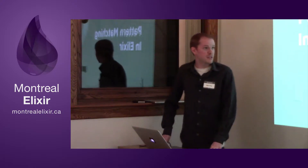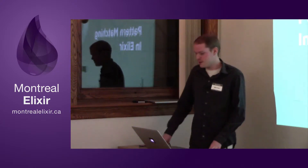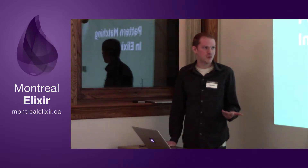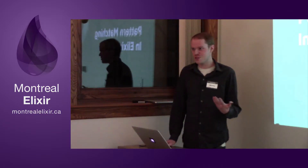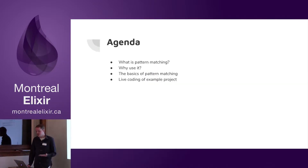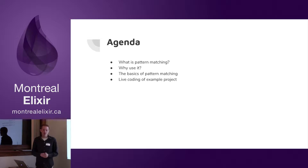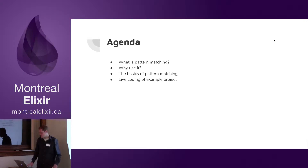I'm going to be talking about pattern matching in Elixir. This is one of my favorite aspects — I was immediately in love with it when I started the language. So what are we going to be talking about? First of all, what is pattern matching? Why should we use it? The basics of using it, and a little live coding example.